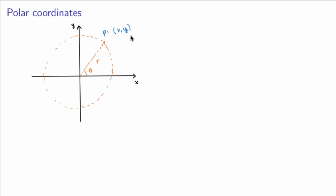So in other words, to specify the position of the point, instead of giving the x and y coordinates, I could give the radius r and the angle of rotation theta. This is what's called polar coordinates. For example, if I give you the point with polar coordinates 1 and π/2, this is located on a circle of radius 1 and the angle of rotation from the x-axis is π/2. So it will be on the y-axis at distance 1 from the origin. This point P has Cartesian coordinates (x, y) = (0, 1) and polar coordinates (r, θ) = (1, π/2).